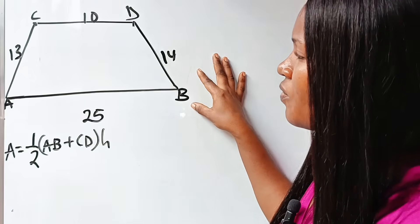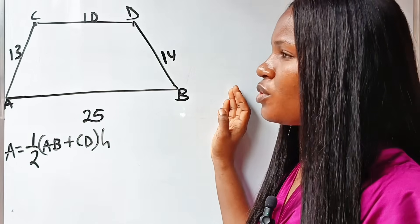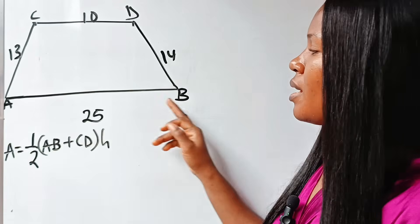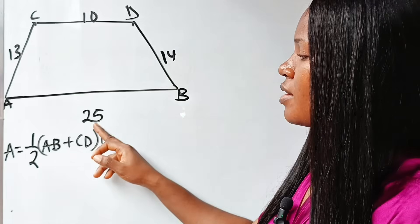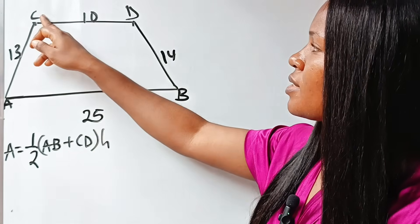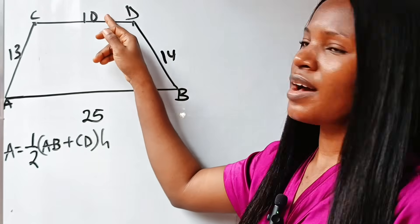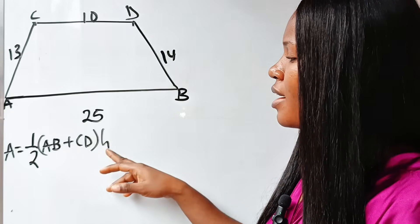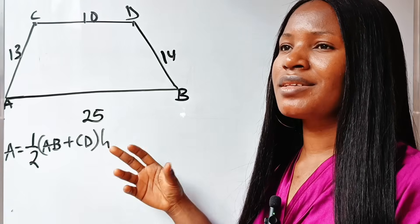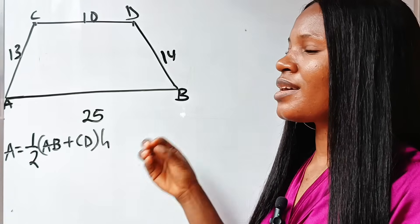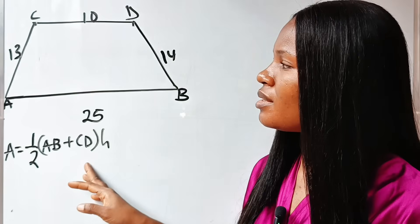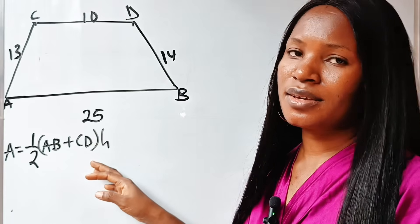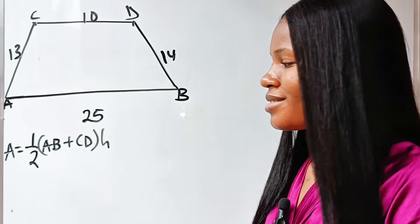If you look at this particular diagram, you will notice that AB is given as 25 and CD is given as 10, but the height is not given. Meaning that the only thing preventing us from getting the area of this trapezium is the height. So how do we get the height?